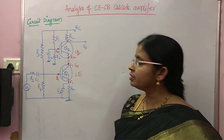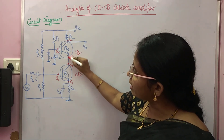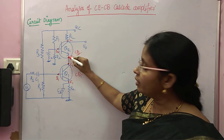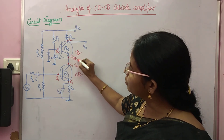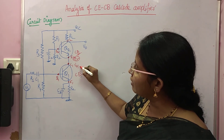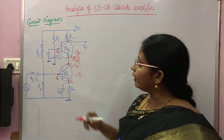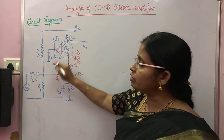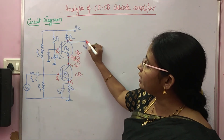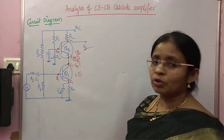The next stage is CB — common base. V01 is connected as input to the emitter, so VI2 equals V01. The base is grounded because it is common base, and at the collector we are taking the output. This becomes the final output.